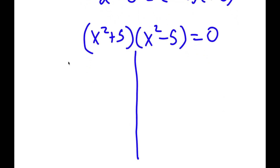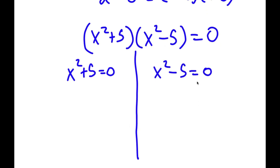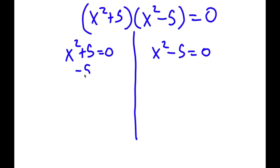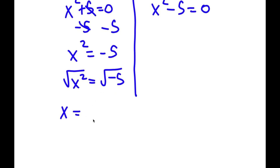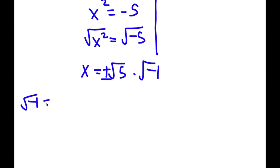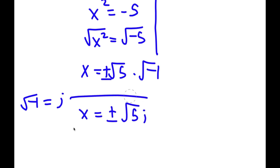This gives me two equations: x squared plus 5 equals 0 and x squared minus 5 equals 0. For x squared plus 5 equals 0, subtracting 5 gives x squared equals negative 5. Taking the square root of both sides, x equals positive or negative square root of 5 times i — since the square root of negative 1 is i. So these are two solutions: x equals plus or minus square root of 5i.